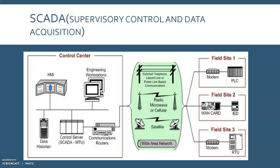Field sites are often equipped with remote access capabilities to allow operators to perform remote diagnostics and repairs, usually over a separate dial-up modem or WAN connection. Standard and proprietary communication protocols running over serial and network communication are used to transport information between the control center and the field sites using telemetry technologies such as telephone lines, cables, fiber, and radio frequency — including broadcast, microwave, and satellite.